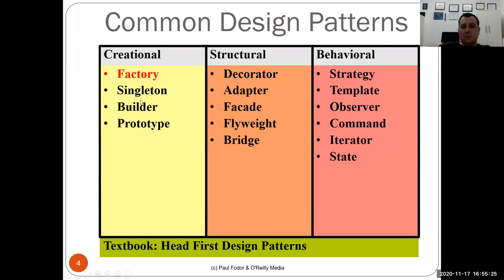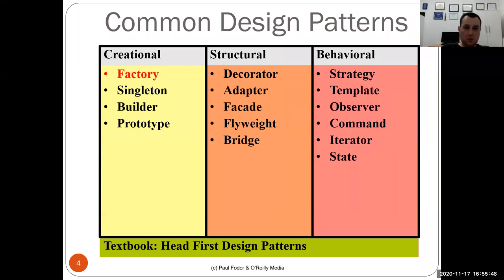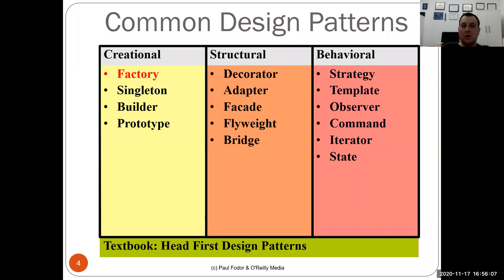The builder design pattern is used when you want to build a large object that has multiple steps in its creation, and you don't want to expose methods that make it mutable. Once it's created, you want it to be immutable and unchangeable. The builder design pattern lets you build incrementally in stages. Once you are happy with the draft, you build the object, and once built, it cannot be changed. It encapsulates the construction of a complex object that needs multiple steps to be created, and once created, nobody can modify it.